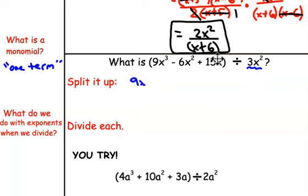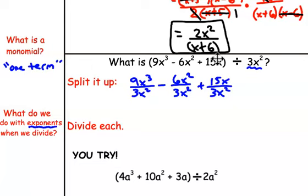What that means is write each one as a separate fraction: 9x to the third divided by 3x squared minus 6x squared divided by 3x squared plus 15x over 3x squared. Splitting those up. Then we divide each. What do we do with the exponents when we divide? When we divide with exponents, we subtract. We subtract the exponents. So we're dividing the coefficients, the numbers in front, but we are subtracting the exponents.